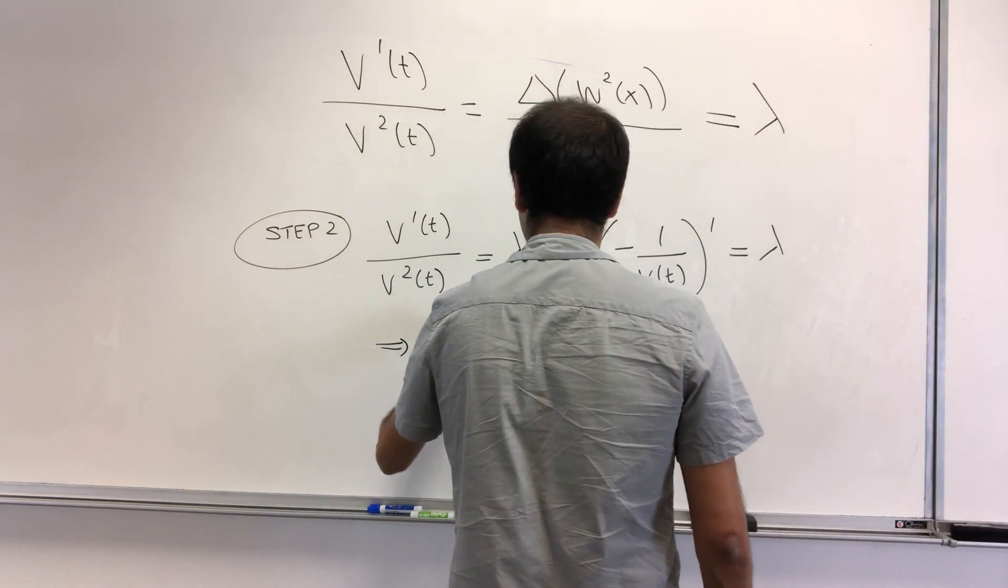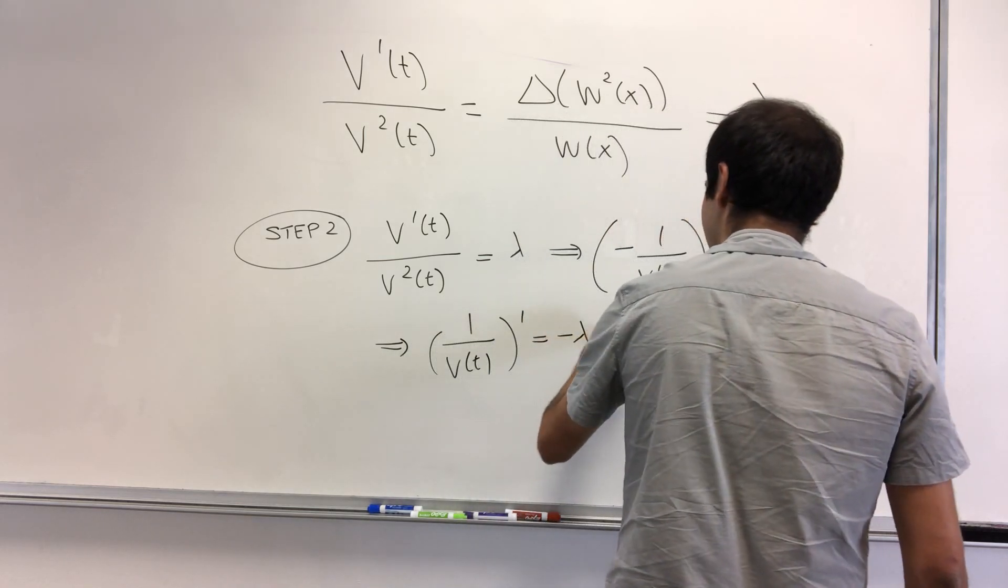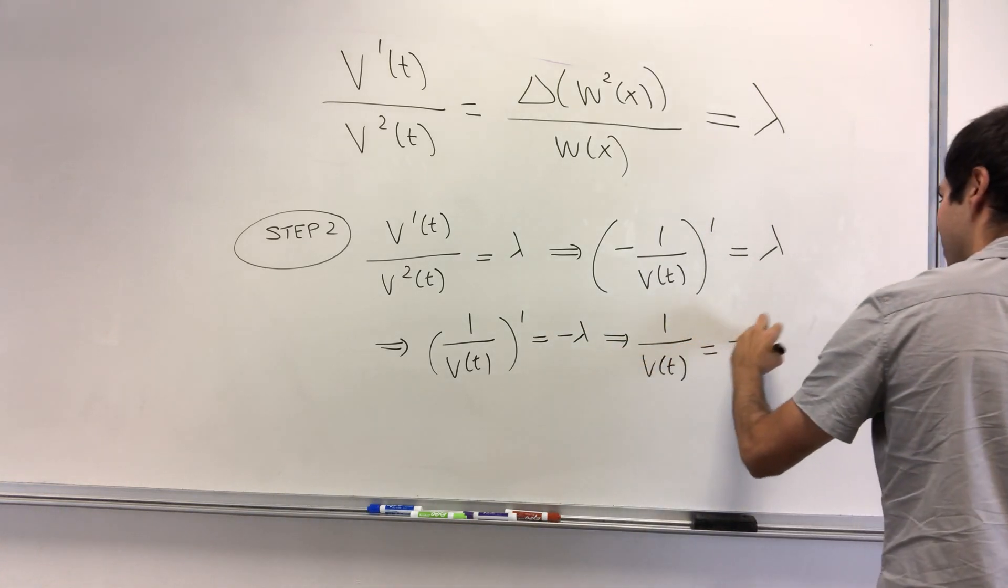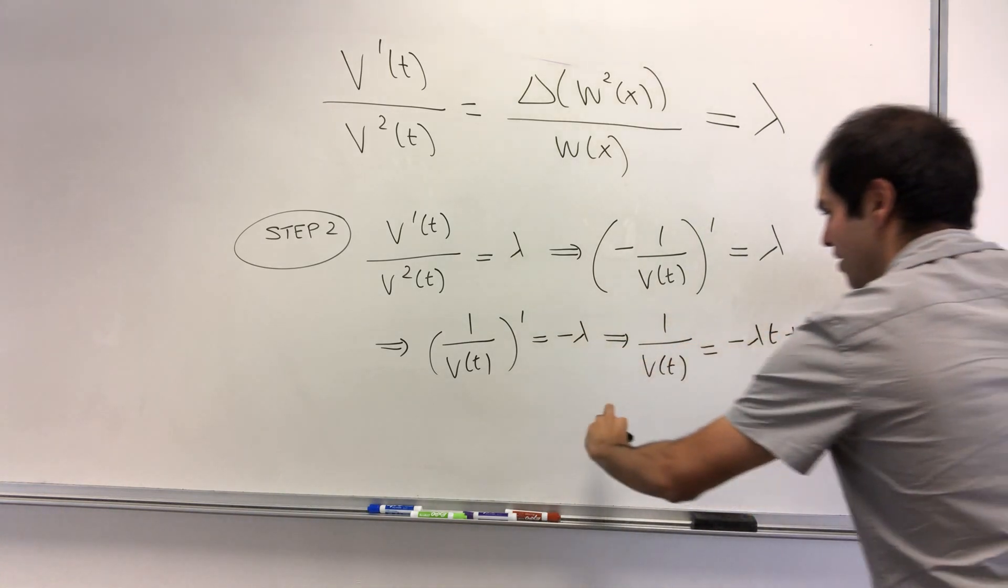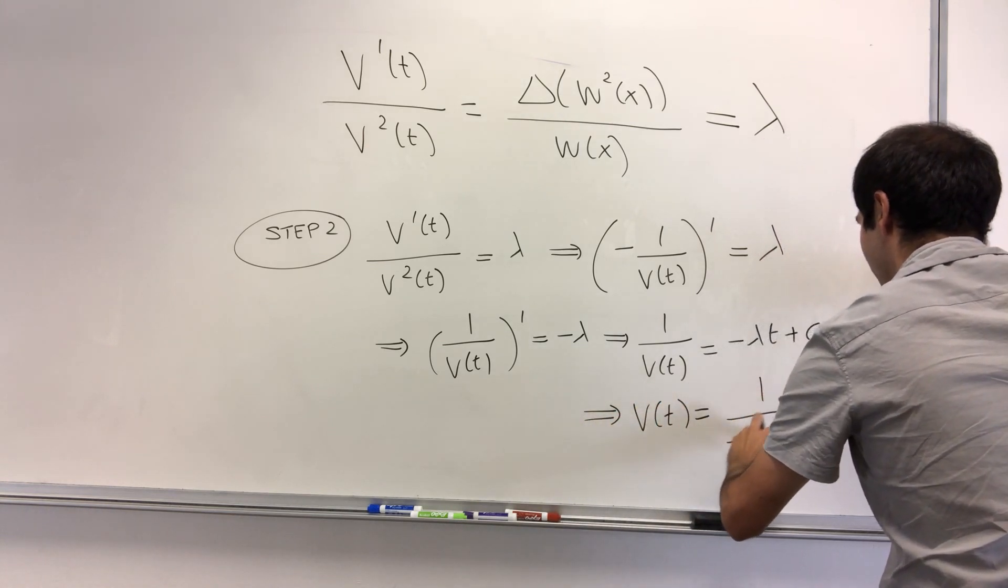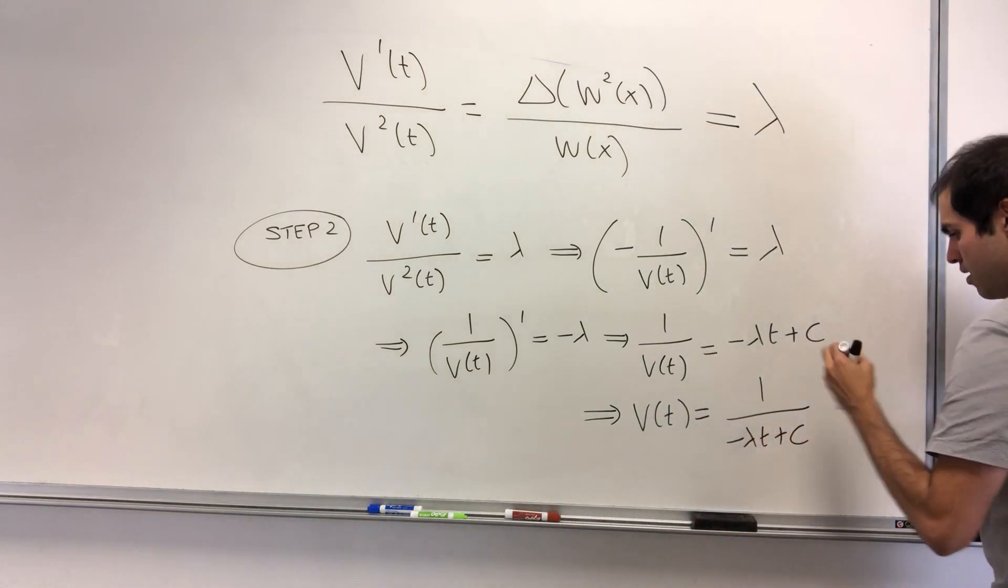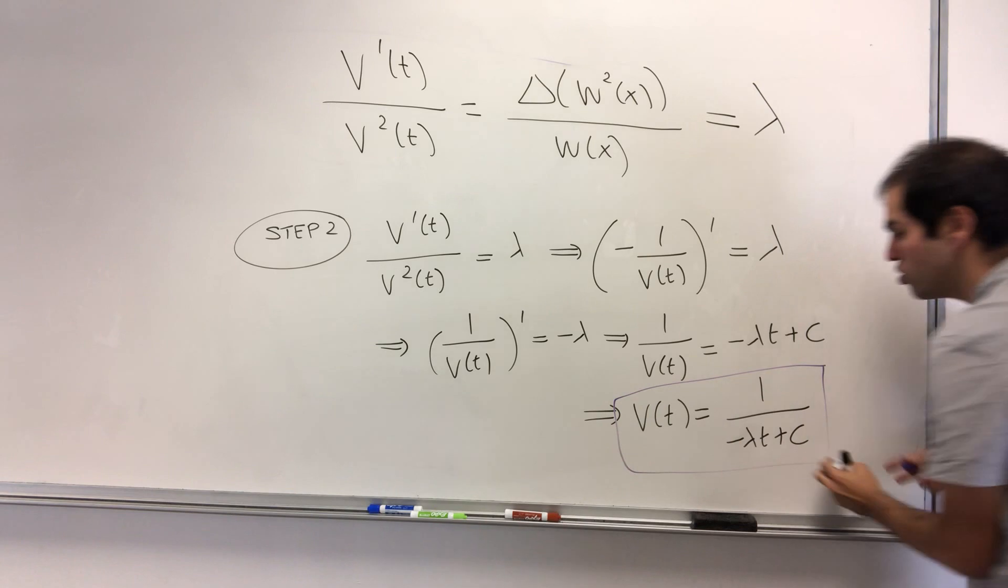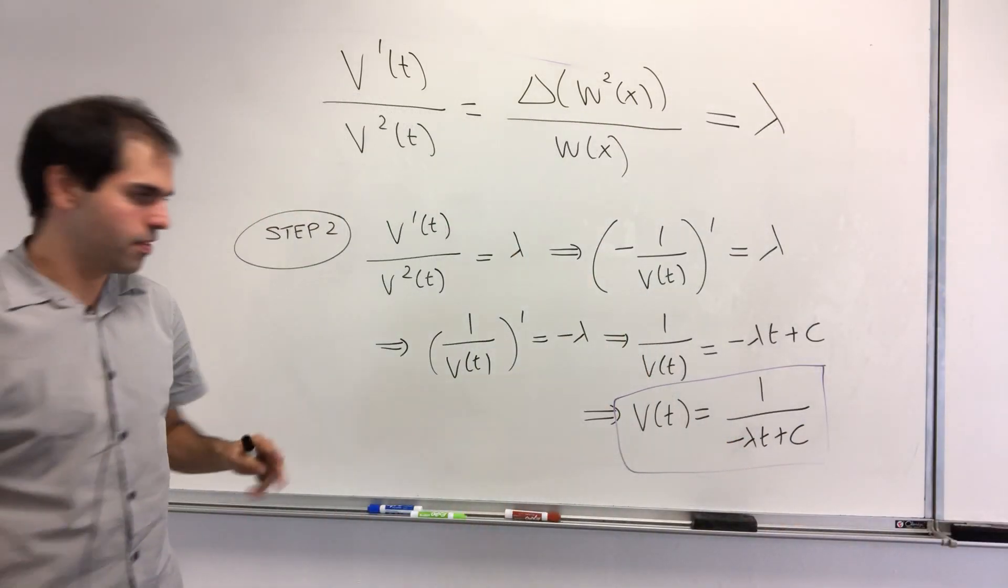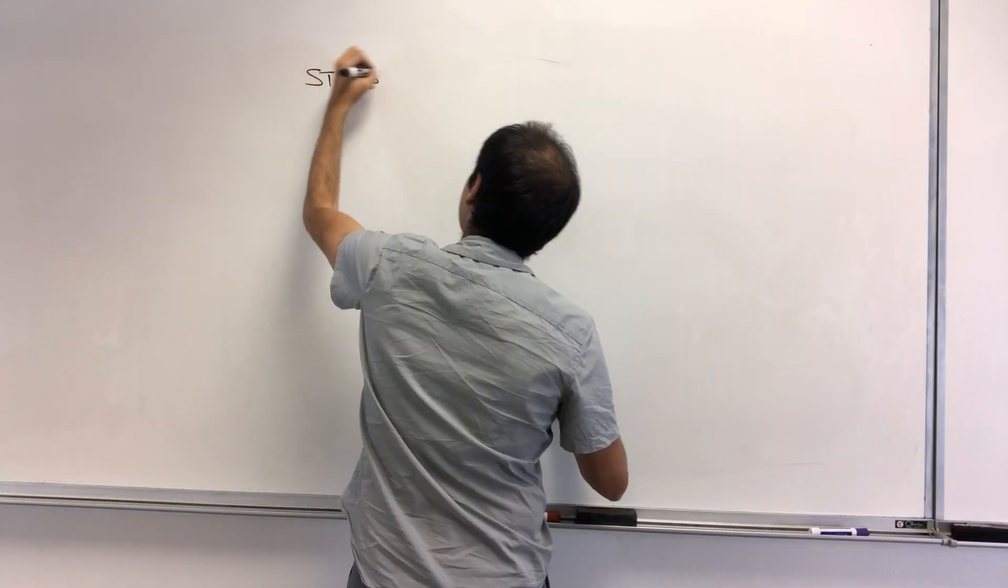So basically, one over v of t prime equals minus lambda, so one over v of t equals minus lambda t plus a constant, so v is just one over minus lambda t plus a constant. Which is good, provided we find lambda, which we'll do now with w. All right, so that's one hand. We found v.